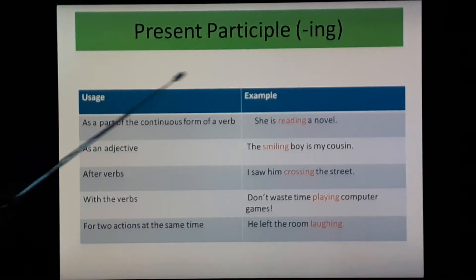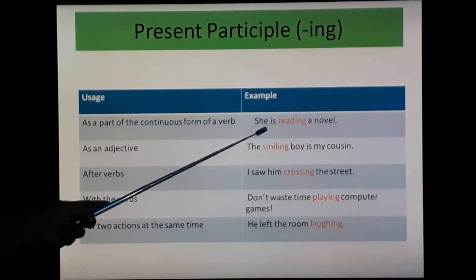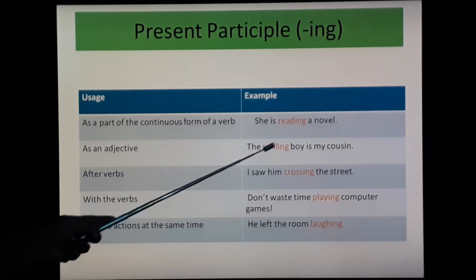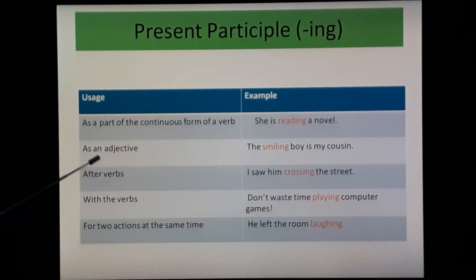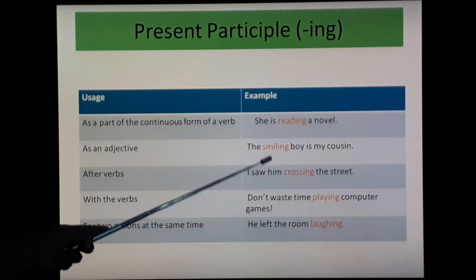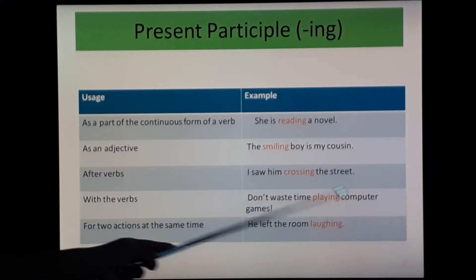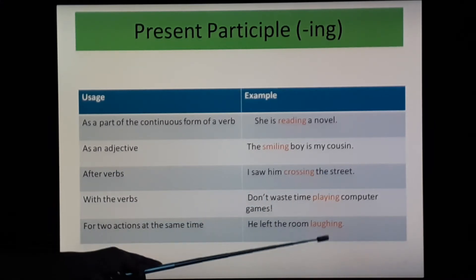Let's see usage and examples of present participle. First, as part of the continuous form of a verb — for example, 'She is reading a novel,' read plus -ing. It works as an adjective — for example, 'The smiling boy is my cousin,' smiling — smile plus -ing. It works after adverbs — for example, 'I saw him crossing the strip,' cross plus -ing. It works with verbs — for example, 'Don't waste time playing computer games,' playing — play plus -ing. For two actions at the same time — 'He left the room laughing,' laugh plus -ing.